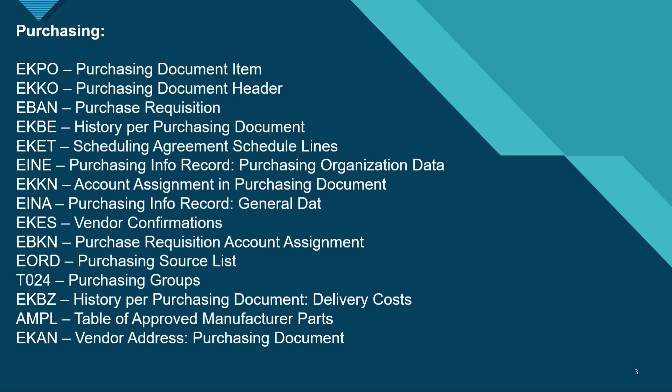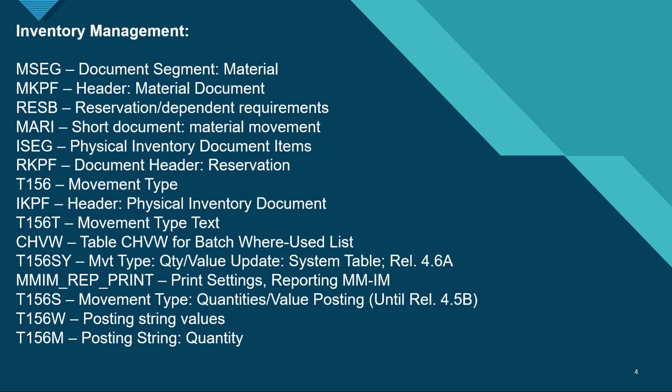EORD has information about source list. T024 has the information about purchasing groups. EKBZ has the information about history of the purchasing documents related to delivery costs. AMPL is the table for approved manufacturer parts. EKAN has the vendor address of the purchasing document.